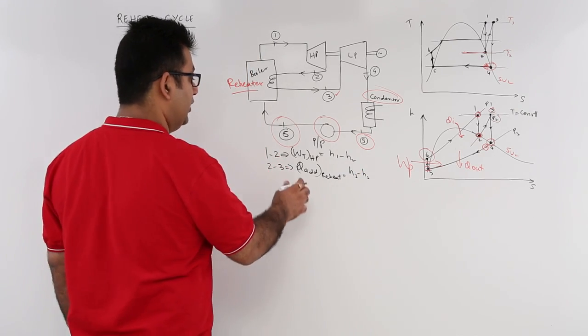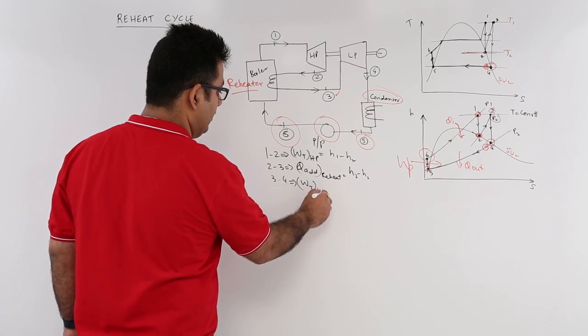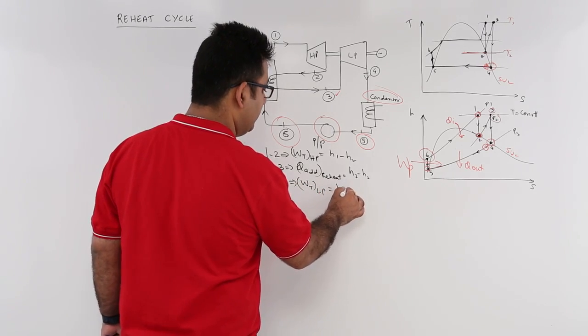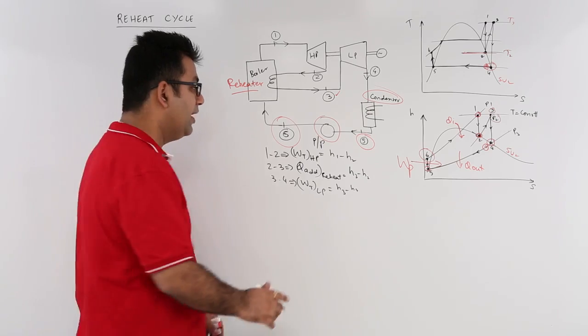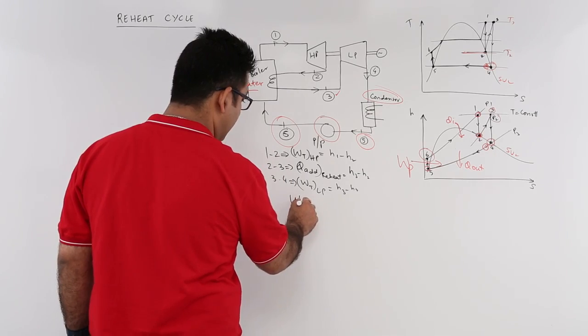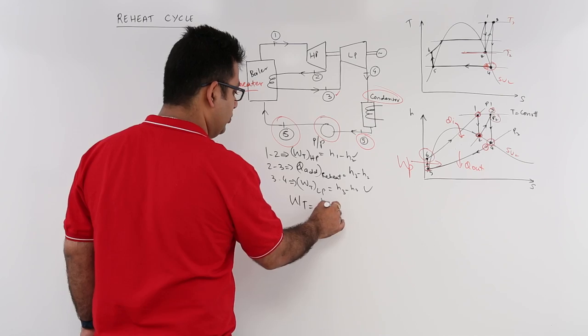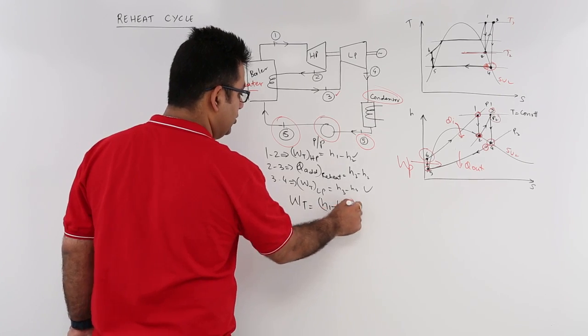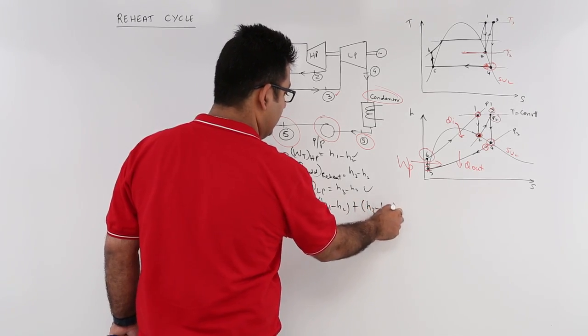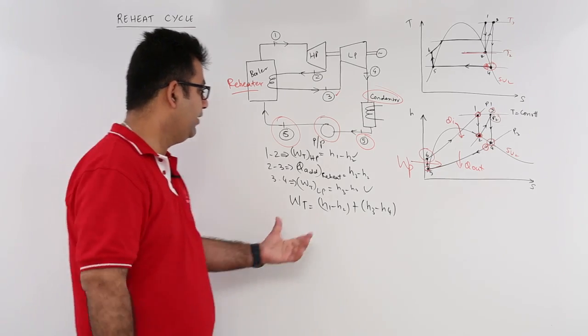From 3 to 4, this is the turbine work at low pressure, which would be H3 minus H4. If you have to find out the total turbine work, Wt equals (H1 - H2) plus (H3 - H4). This is the total turbine work that you get.